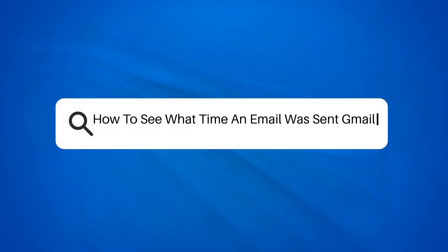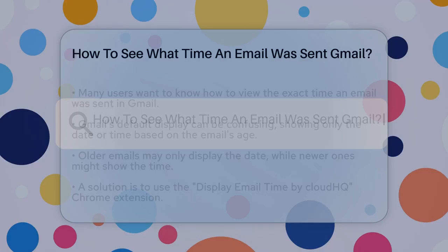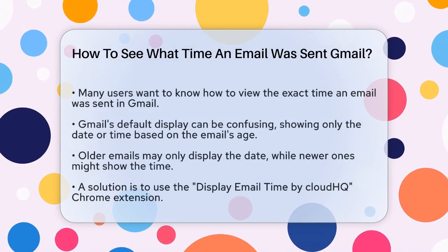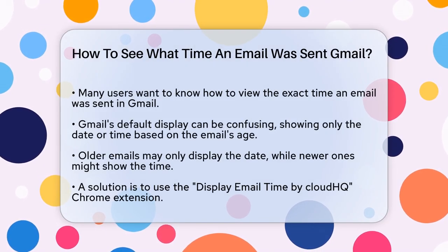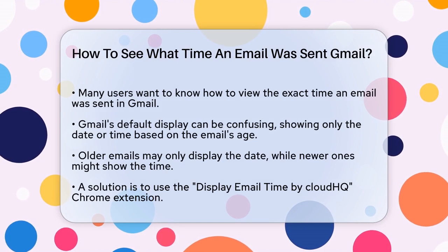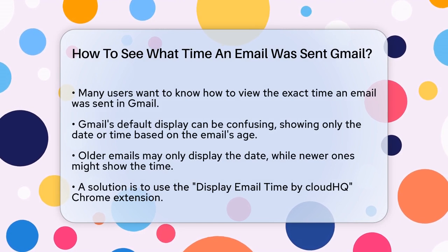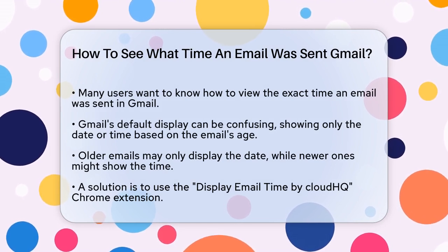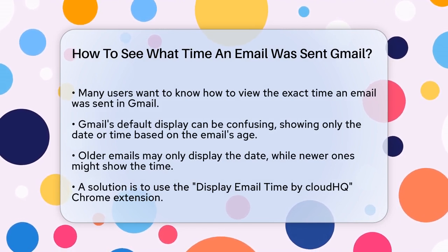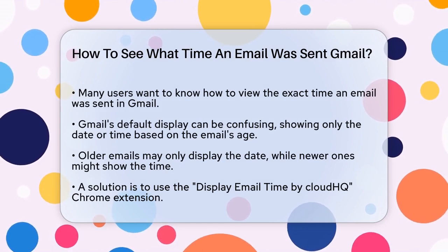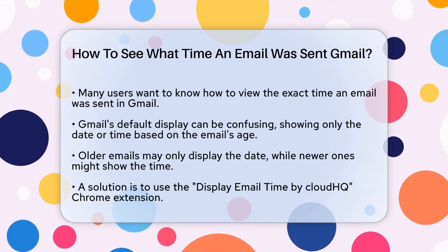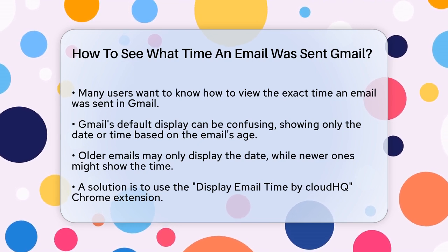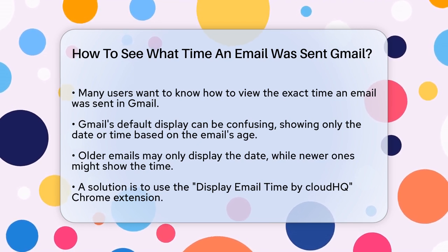How to see what time an email was sent in Gmail? If you're wondering how to see the exact time an email was sent in Gmail, you're not alone. Gmail's default display can sometimes be confusing, especially when it shows only the date or time depending on how old the email is. Let's figure out how to make this clearer.